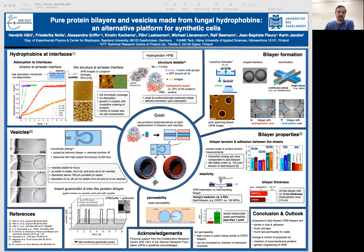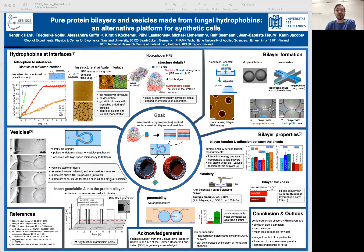From these bilayers, we can now create vesicles with a method called aqueous jetting, which is basically the same as blowing soap bubbles, just on a smaller scale. With this, we were able to create stable water-in-water vesicles, but also oil-in-oil and even air vesicles.